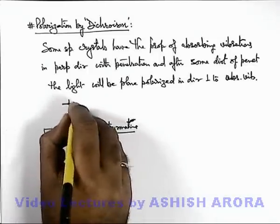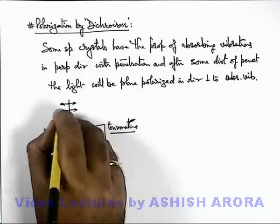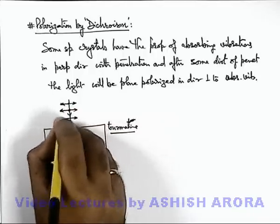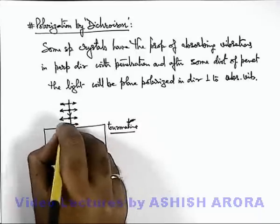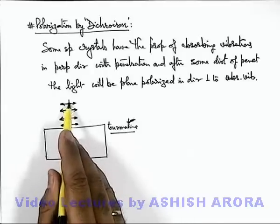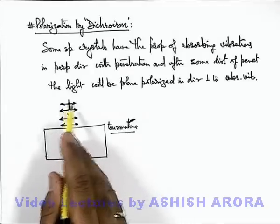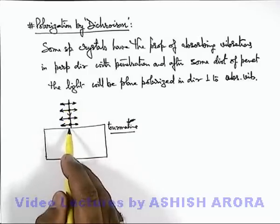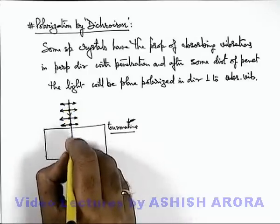So when a light with all oscillations in it is allowed to incident on a dichroic material, in which both the oscillations are taken here along the plane of incidence and perpendicular to the plane of incidence, when the light is passed through it...